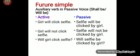Next: Girl will not click selfie. This is a negative sentence of future simple. So let us convert it into passive form. The passive form becomes: Selfie will not be clicked by girl. So now it is the negative form of the passive voice.